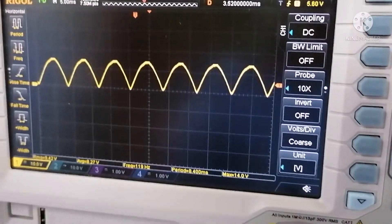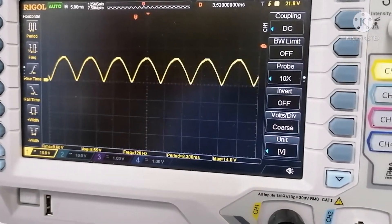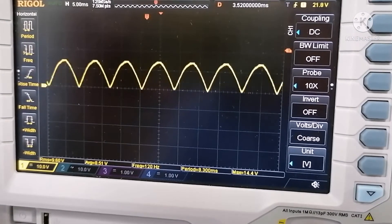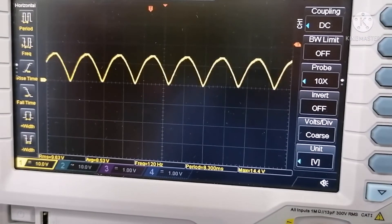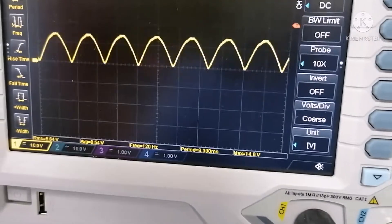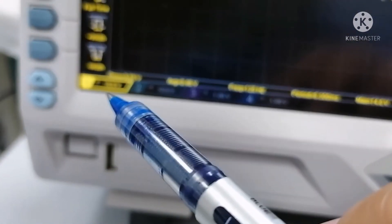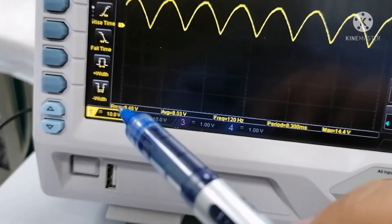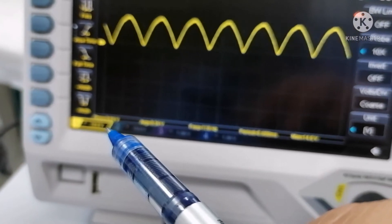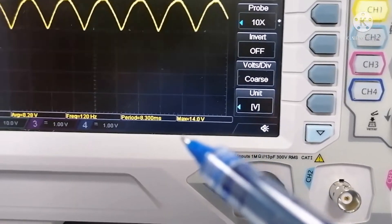Now you can see this is the actual output of the bridge rectifier which is correct. And I set the voltage division to ten volts per division. This one, DC.